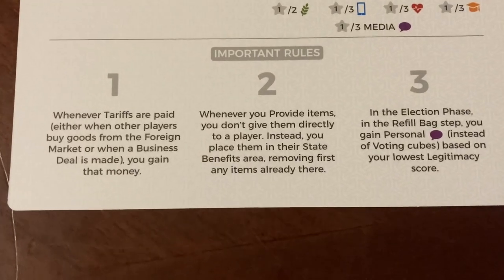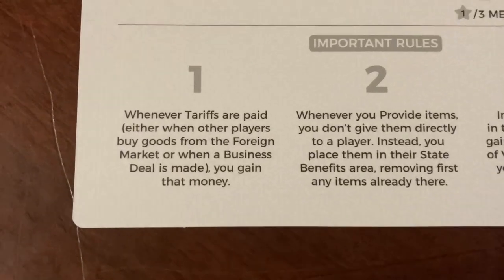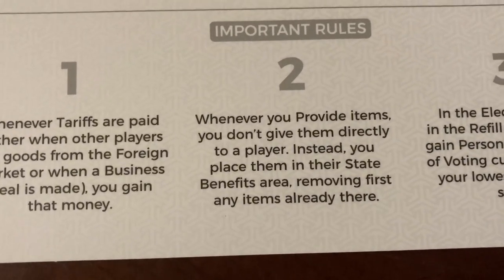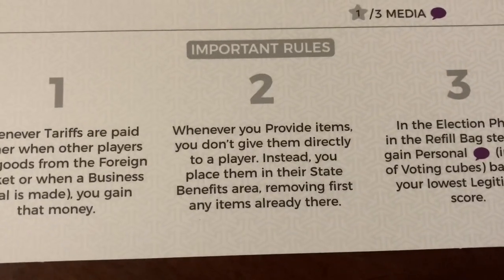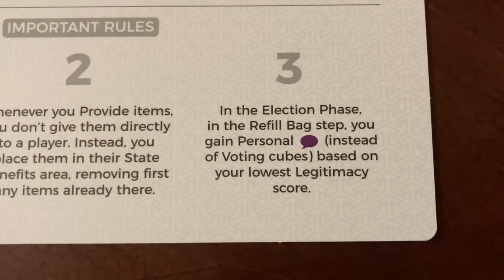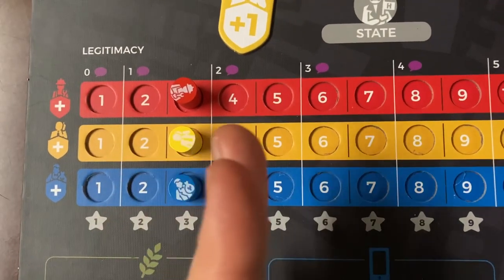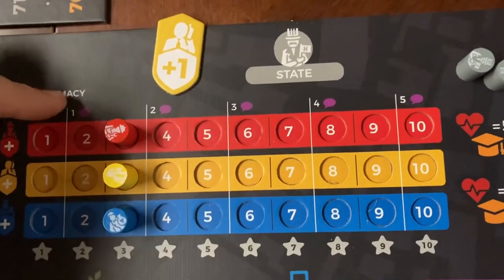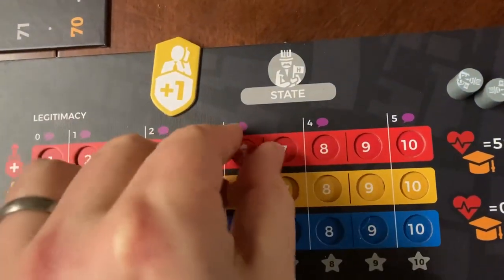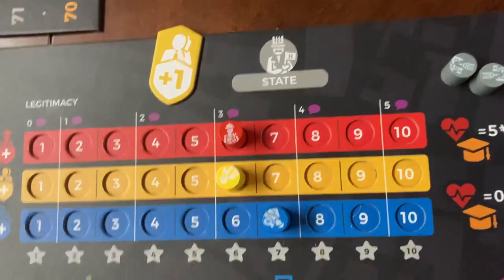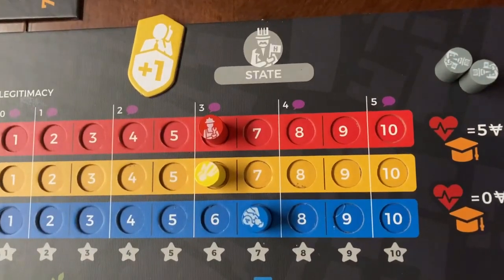A few other important rules: if tariffs are paid by other players, that money goes to the state treasury. When providing items, always put them in the state benefits area rather than giving them directly to players. In the election phase refill bag step, you gain influence instead of voting cubes based on your lowest legitimacy score. Keeping legitimacy even matters here — at a lowest score of three you get one cube, at four you get two, and if you're able to get all of them up to ten, that would get you five influence, which is very important for winning the election.